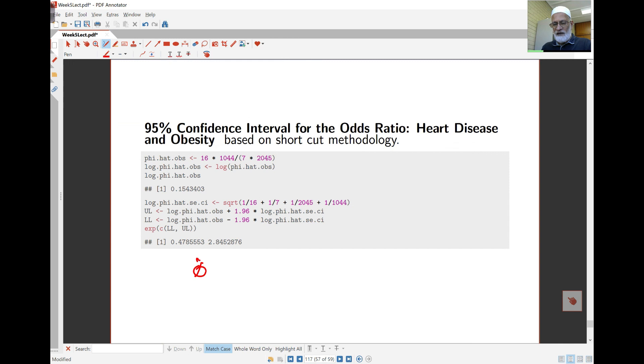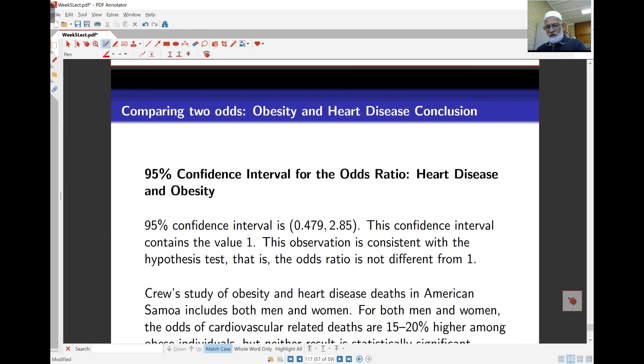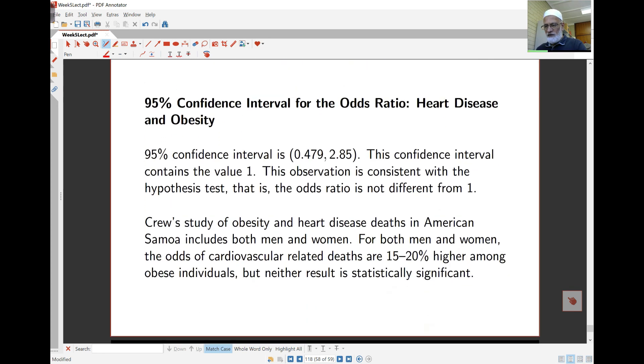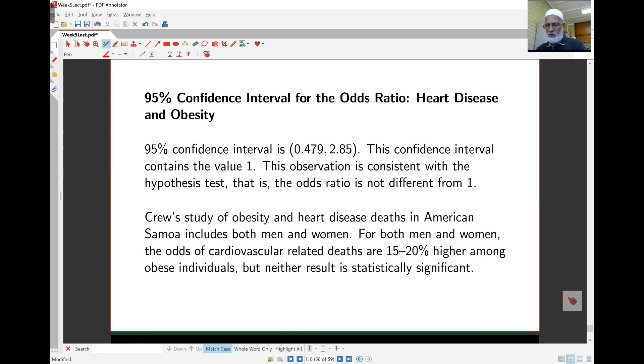Here's going to be 0.479 to 2.845. Now, you find that actually 1 lies in there and we've said earlier about the hypothesis test that the odds ratio is not different from 1. And that's not surprising in that case that I find 1 lies in the confidence interval. So that's just the summary of what we've done here. And you can take a look at more of these examples in the lab sheets for this week and have some practice with this.